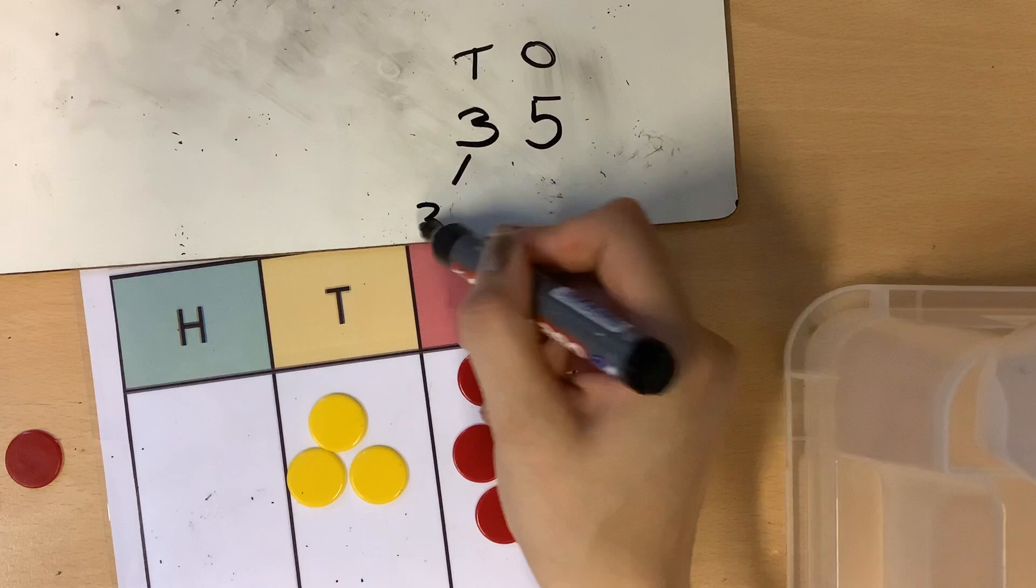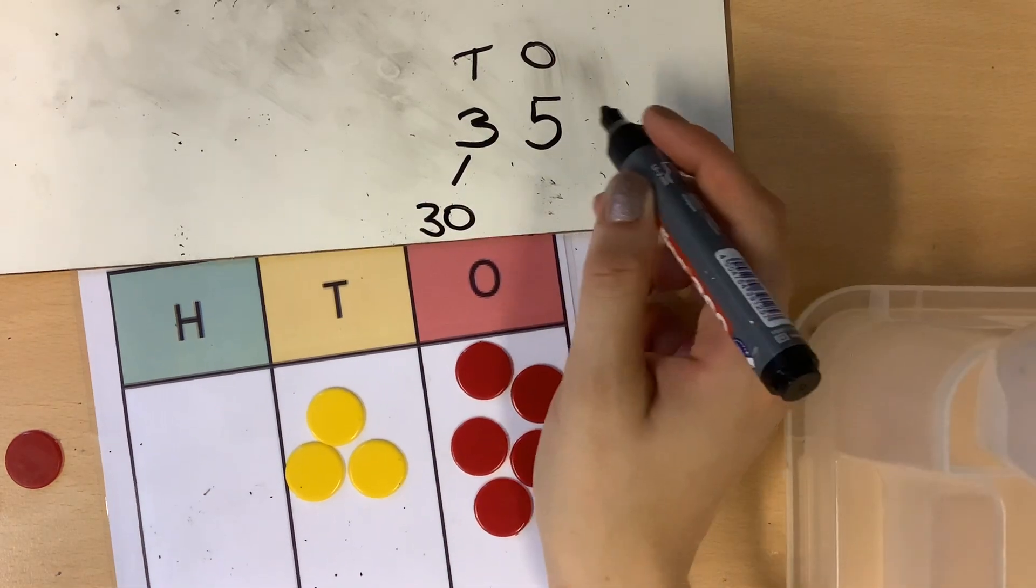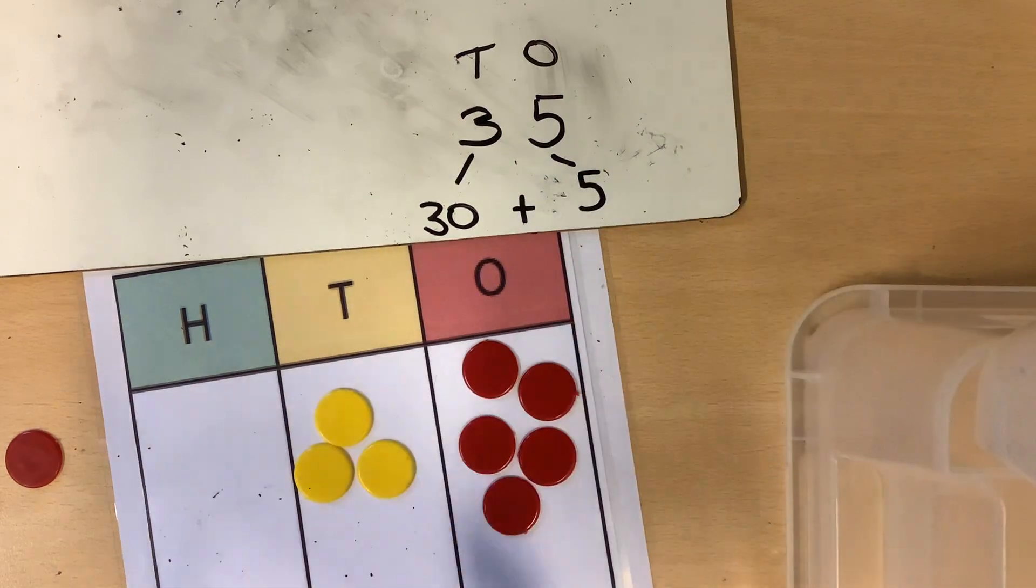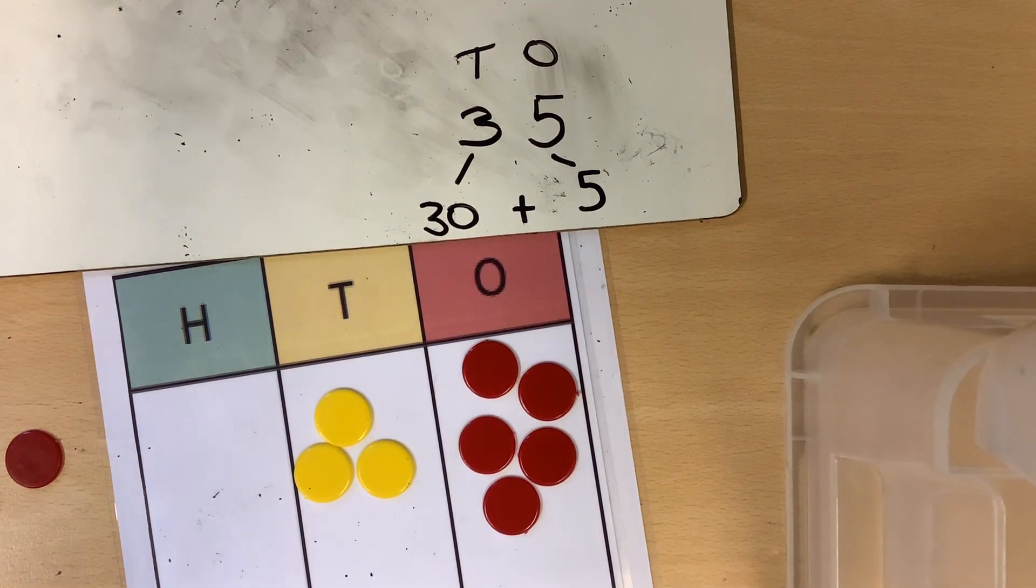Made up of 30. Oh, not 7. 35. 30 and 5. That made me number 35.